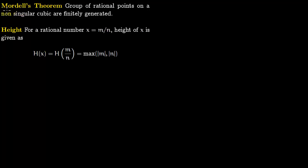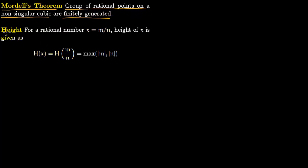We want to prove Mordell's theorem. This theorem says that the group of rational points on a non-singular cubic curve, for example an elliptic curve, is finitely generated. Before we can prove this, we have to define certain notions.